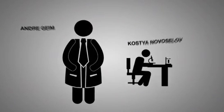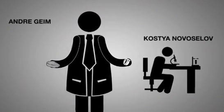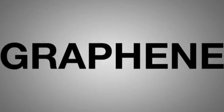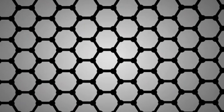In 2004, two Russian scientists used scotch tape and a graphite rock to discover graphene, a layer of atoms arranged in a honeycomb structure.